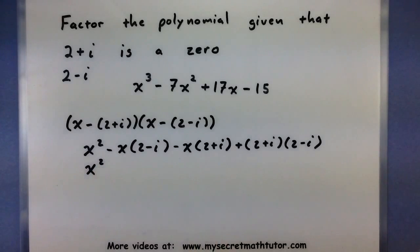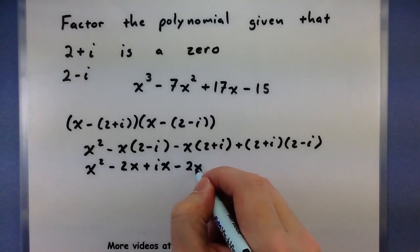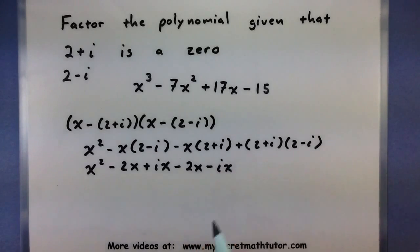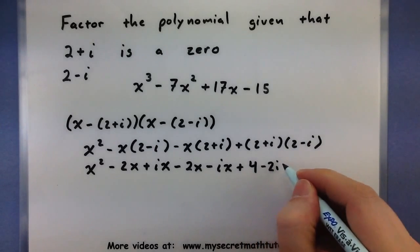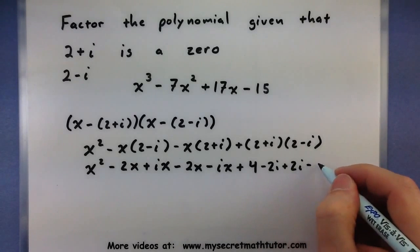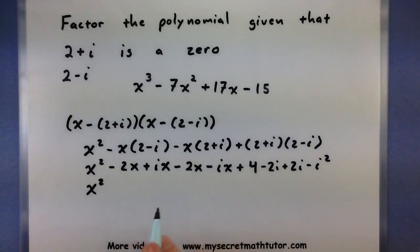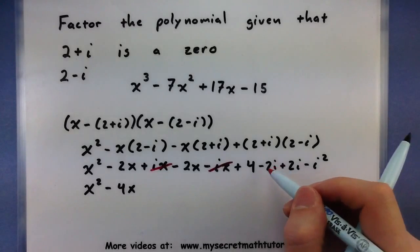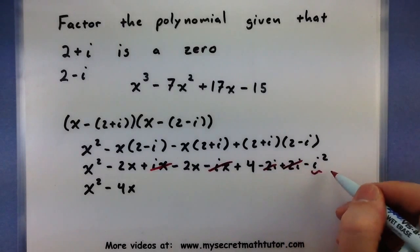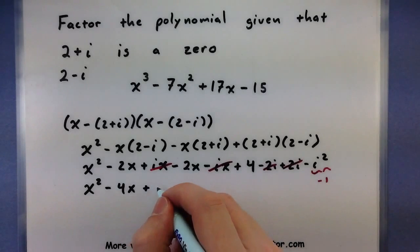Combining terms: x squared, minus 2x plus ix, minus 2x minus ix. For the last terms: 2 times 2 is 4, outside gives minus 2i, inside gives plus 2i, and the last term is minus i squared. The ix terms cancel, the 2i terms cancel, and since i squared equals negative 1, we get minus(minus 1) which is plus 1. So 4 plus 1 gives plus 5. The result is x squared minus 4x plus 5.